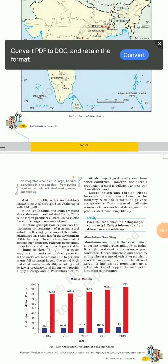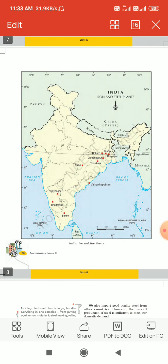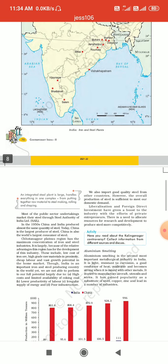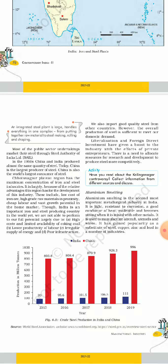Good morning class. Yesterday we completed iron and steel plants. Today we move forward. Most of the public sector undertakings market their steel through the Steel Authority of India, that is called SAIL.